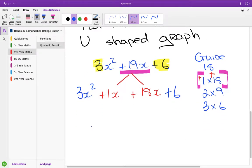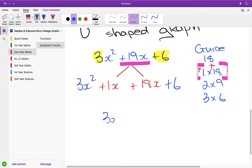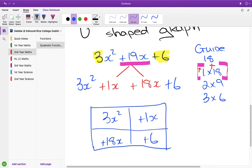Then you go into the box, so 3x squared plus 1x plus 18x plus 6.